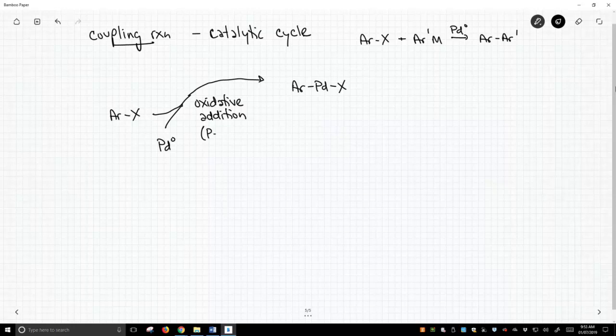How is it oxidative? Well, we're going from palladium zero to palladium two. So this is really an aryl anion, palladium plus two, and then your halide. So palladium has gone from the zero oxidation state to the plus two oxidation state. It's exactly what we saw with making a Grignard reagent.